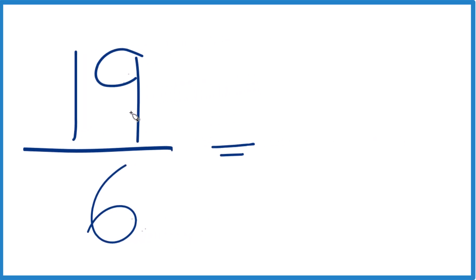6 goes into 19... see, 3 times 6 is 18 with 1 left over. Bring the denominator 6 across. And 19/6, that equals 3 and 1/6.